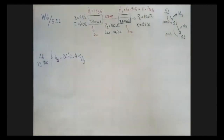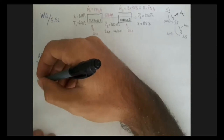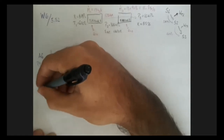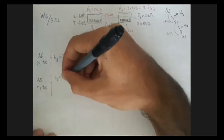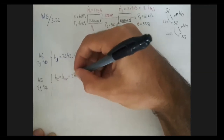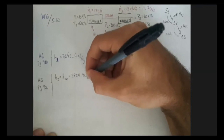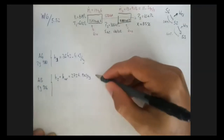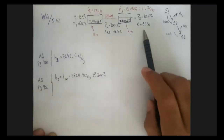For states 2 and 3, we go to table A5 on page 906. For state 2 at 300 kilopascals, we take the saturated vapor enthalpy, which is 2724.9 kilojoules per kilogram.